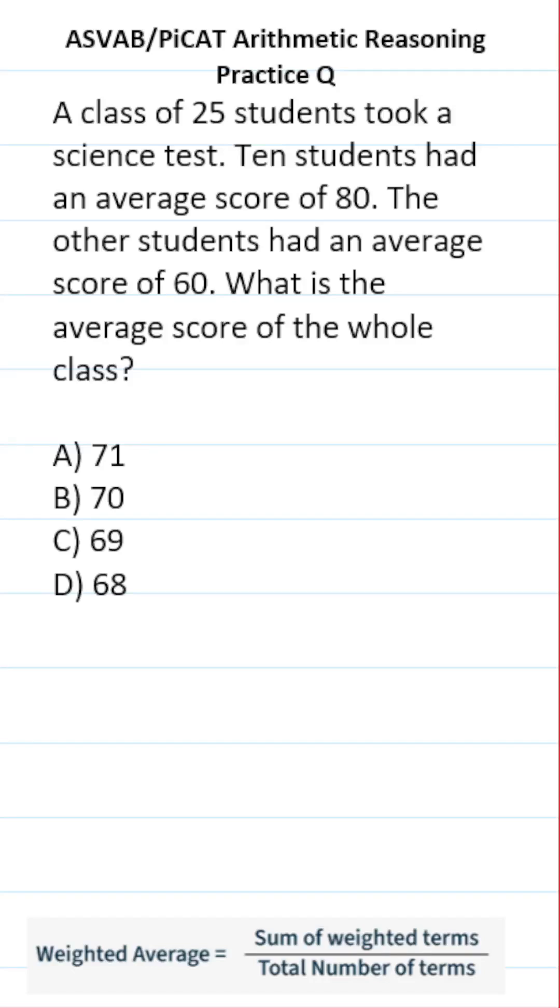This ASVAB PICAT arithmetic reasoning practice test question says, a class of 25 students took a science test. 10 students had an average score of 80. The other students had an average score of 60. What is the average score of the whole class?